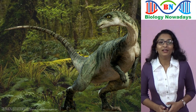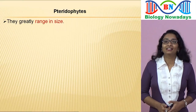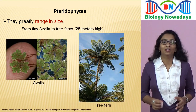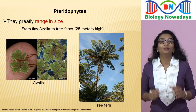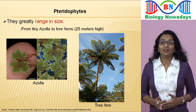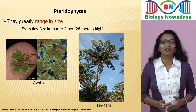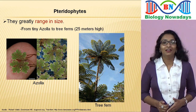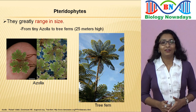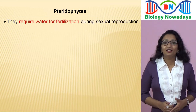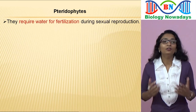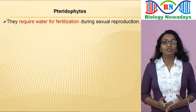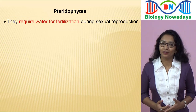They covered many parts of earth during the times of dinosaurs and continue to flourish even today. Pteridophytes range greatly in size — from tiny azolla plants to huge tree ferns which reach up to a height of 25 metres. Like bryophytes, pteridophytes also require water for fertilisation to occur during sexual reproduction.